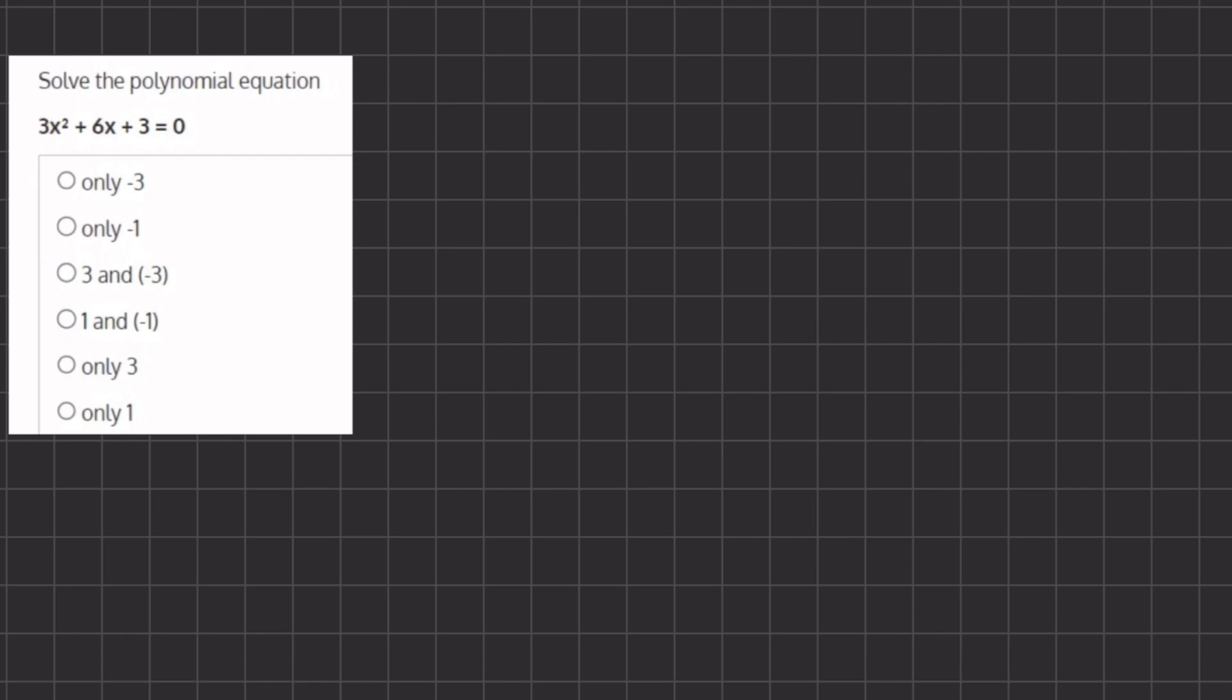We have to find a and b which is 3 times 3 which equals 9, and we have to find two numbers a and b that equal to this 6 right over here.